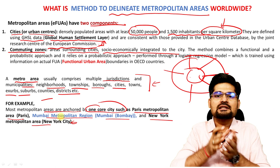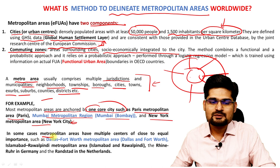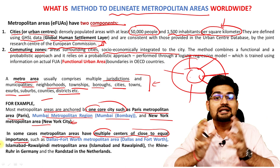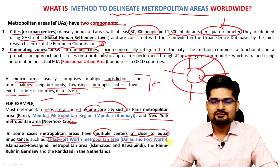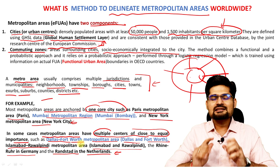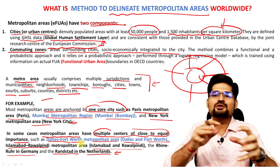In some cases, metropolitan areas have multiple centres of close to equal importance — an agglomeration of centres. Examples include the Dallas–Fort Worth metropolitan area, the Islamabad–Rawalpindi metropolitan area in Pakistan, the Rhine–Ruhr region in Germany, and Randstad in the Netherlands.